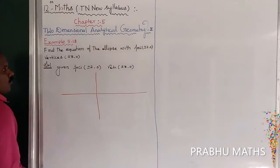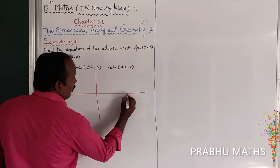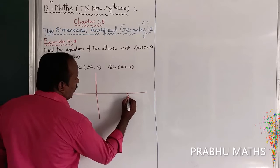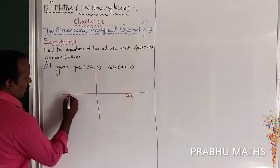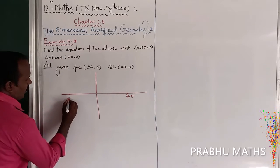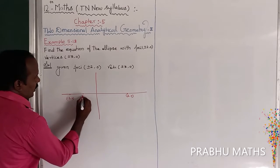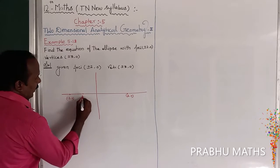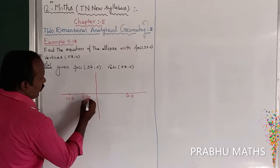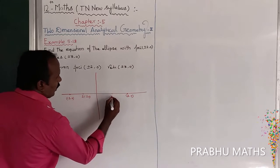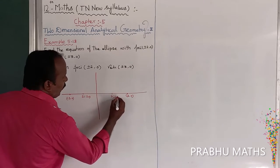Plot the vertices: 3 comma 0 and minus 3 comma 0. Next, the foci: S dash at minus 2 comma 0, and S at 2 comma 0.